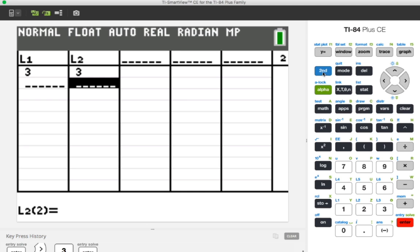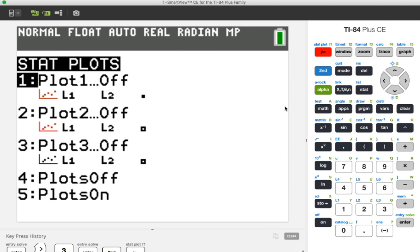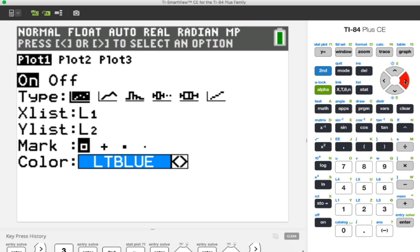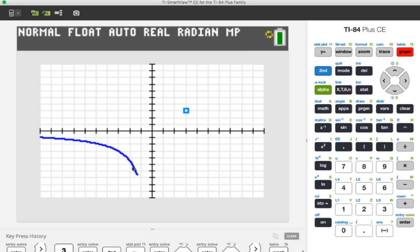In L1 we said the x value is 3 and in L2 we saw the y value was 3. And let's go to second and then stat plot. Let's turn this plot on, it's currently off, so now it's on. Let's go down. We see that the x values are in L1 which is where we placed the 3 and the y value was in L2 where we placed the other 3. Let's use this square here as the marker and let's change the color here to light blue.